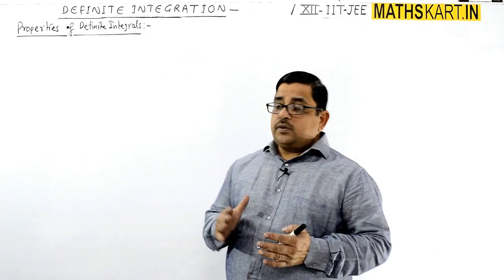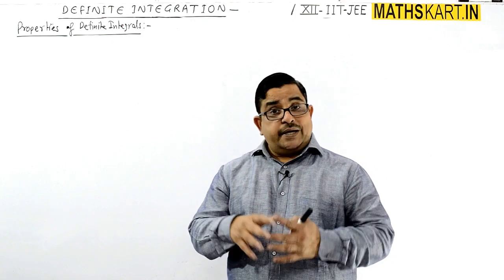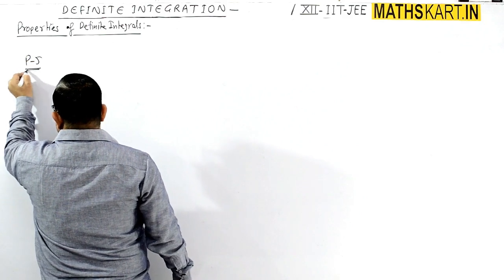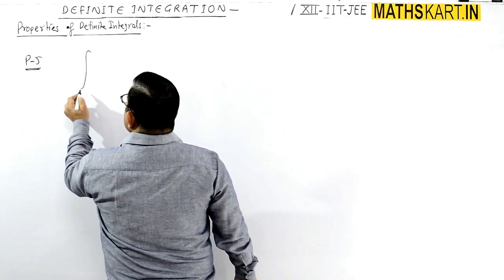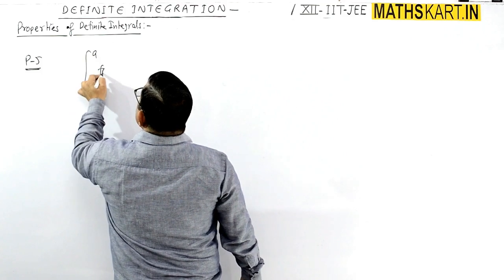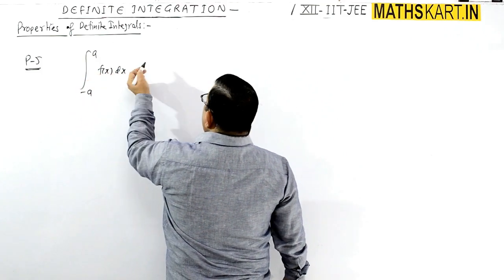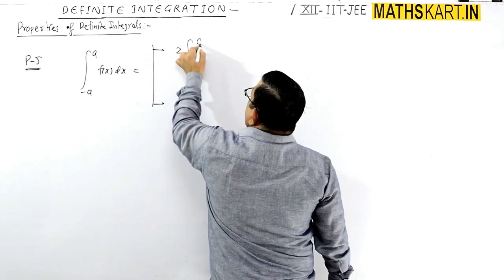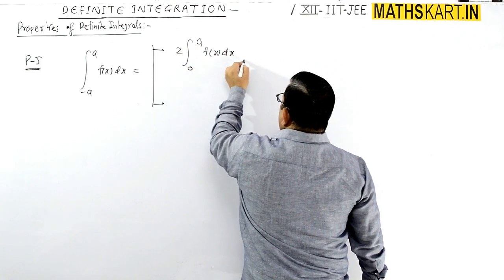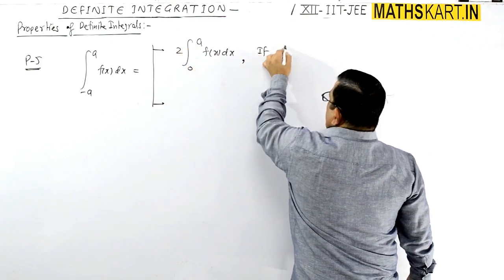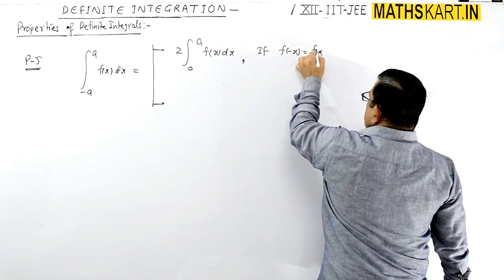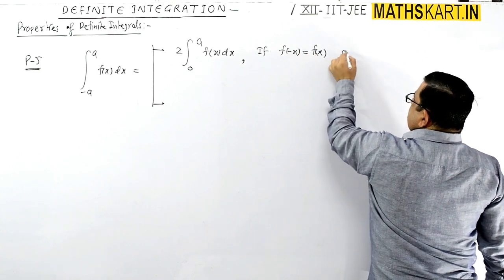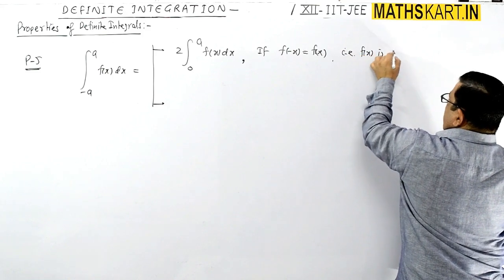Properties of definite integrals. Next property is Property 5. According to this property, the integral from minus a to a of f(x) dx can be written as two times of the integral from 0 to a of f(x) dx, if f(minus x) equals to f(x), which means when the function is even.